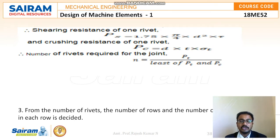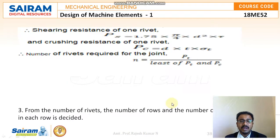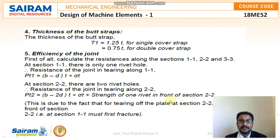The number of rivets required for the joint is Pt divided by the least of Pt and Pc. From the number of rivets, the number of rows and the number of rivets in each row are decided. The thickness of the butt straps is denoted T1: for single cover strap it is 1.25 times the main plate thickness, and for double cover strap it is 0.75 times the thickness.